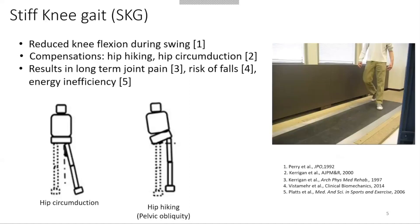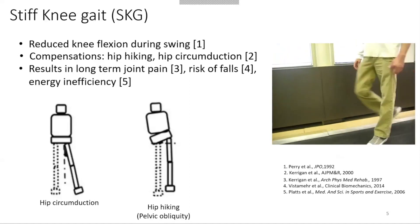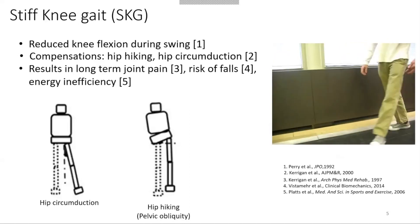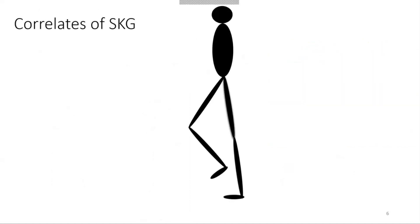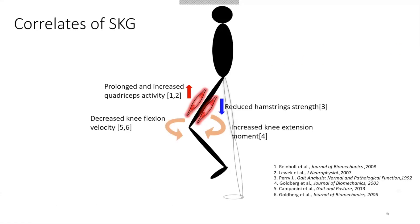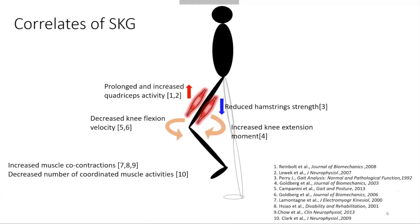A video shows a person with post-stroke stiff knee gait and one can observe the reduced knee flexion and the resulting hip circumduction and hip hiking on the impaired side, which is the left side. Previous studies attempted to find physiological, kinematic, and kinetic correlates for stiff knee gait, including prolonged quadriceps activity, decreased muscle strength in hamstrings, increased knee extension movement during swing phase, and reduced knee flexion velocity during swing phase.